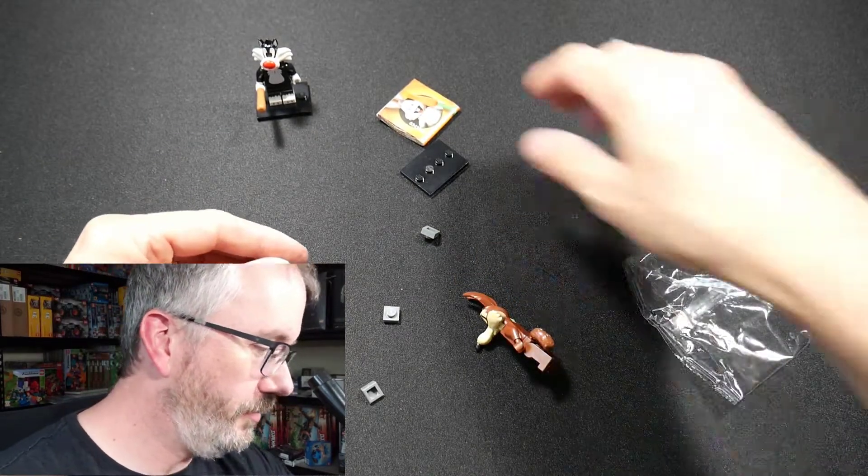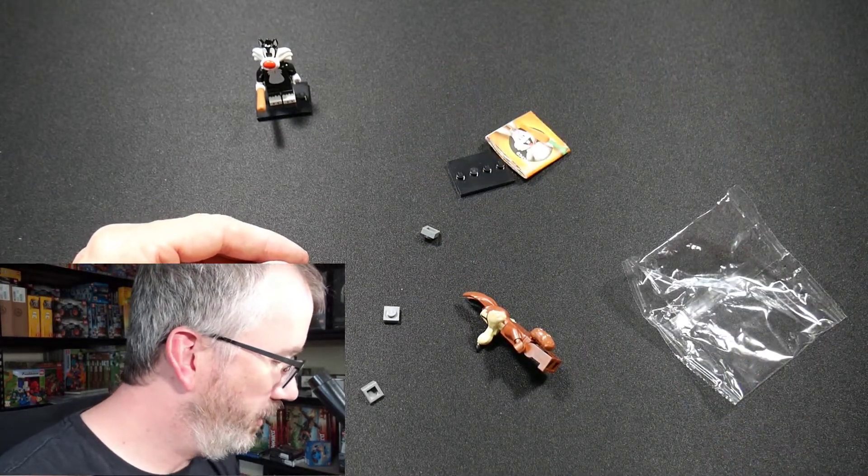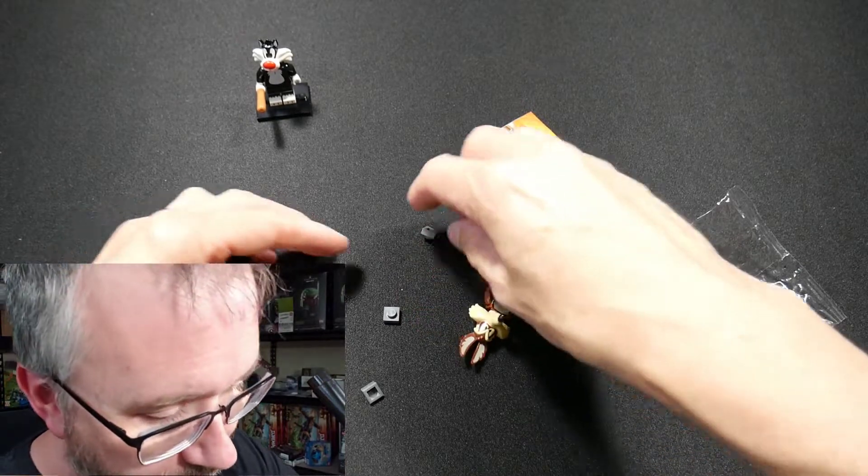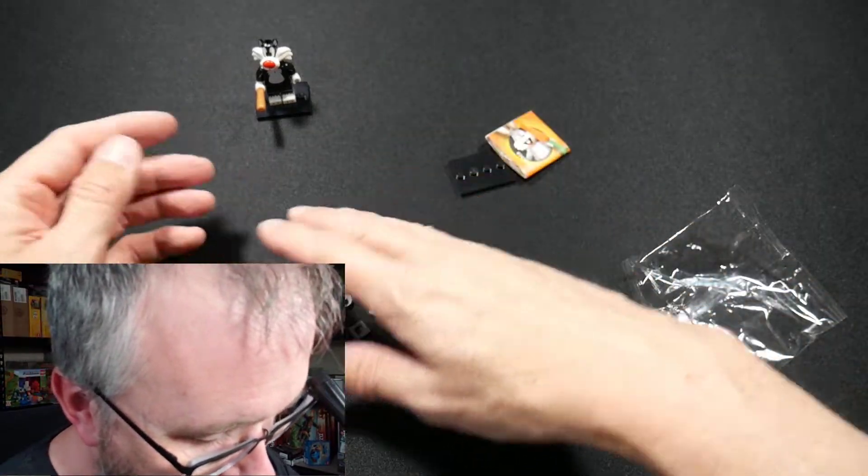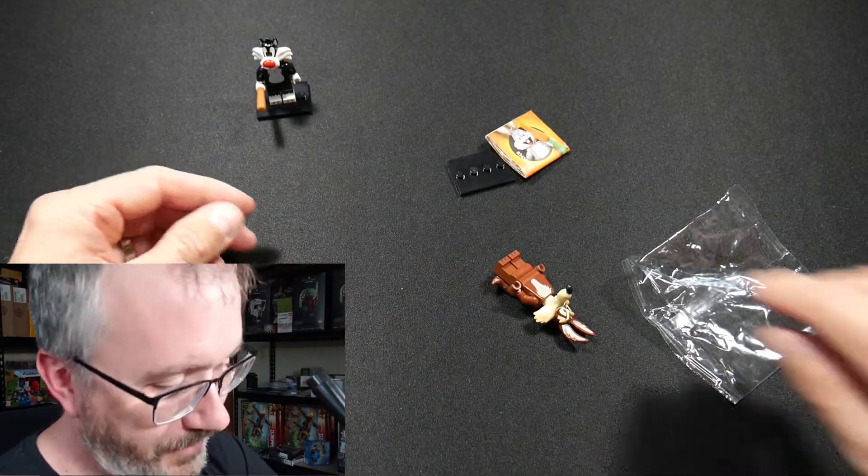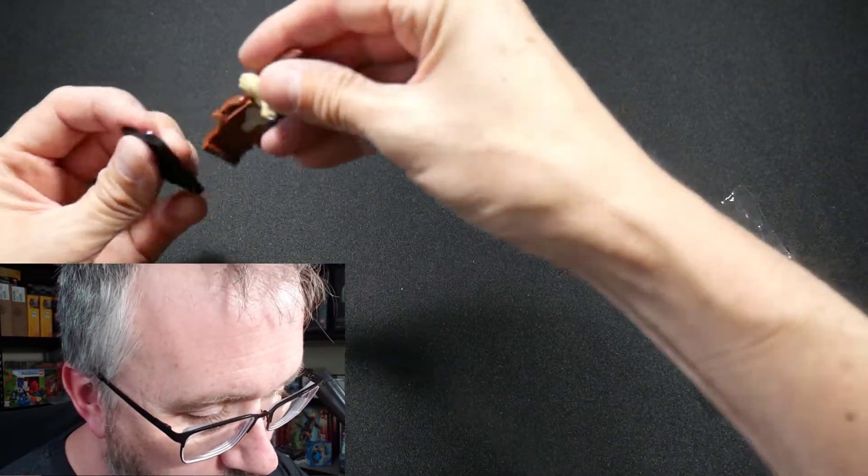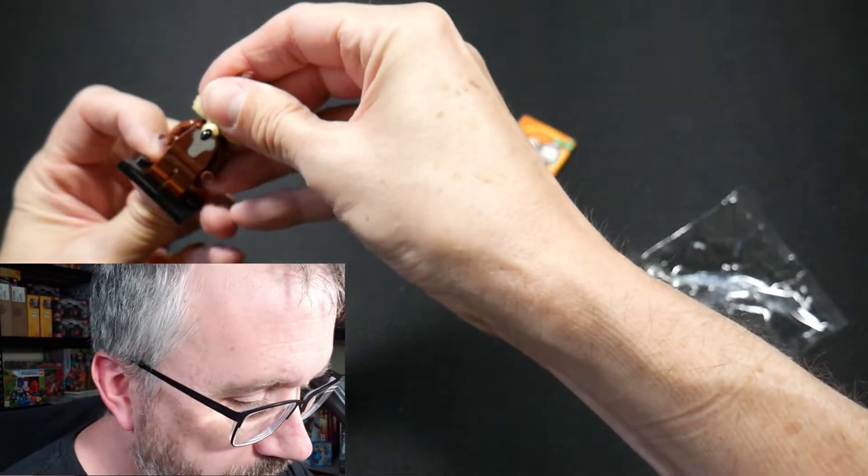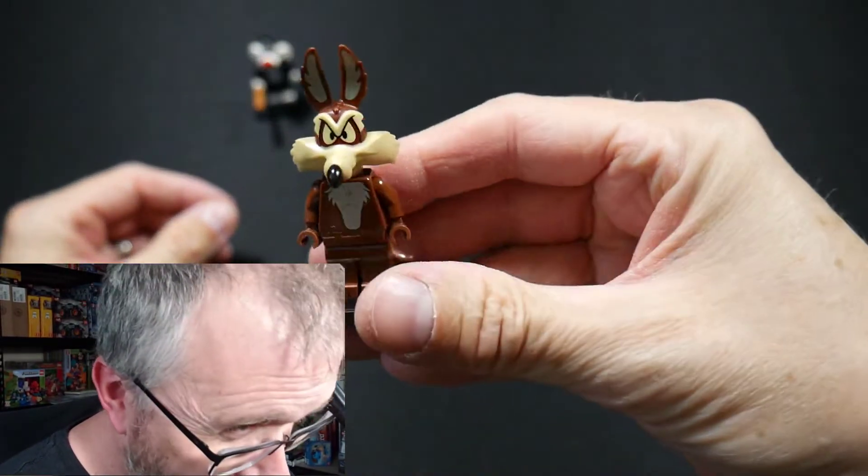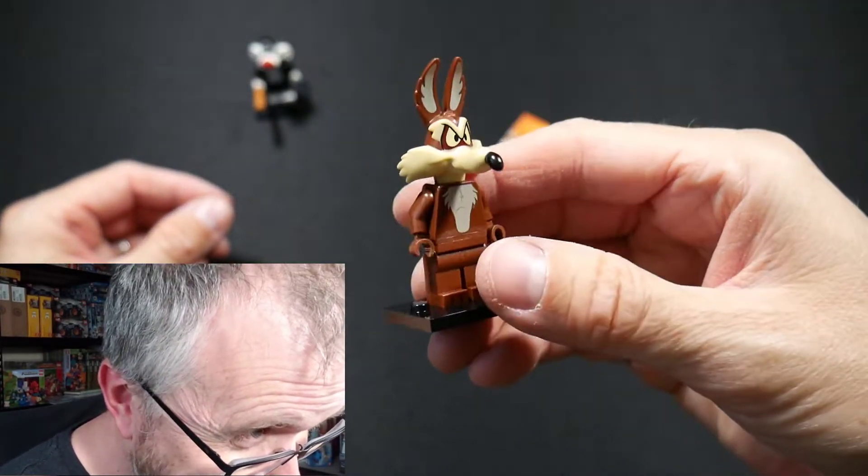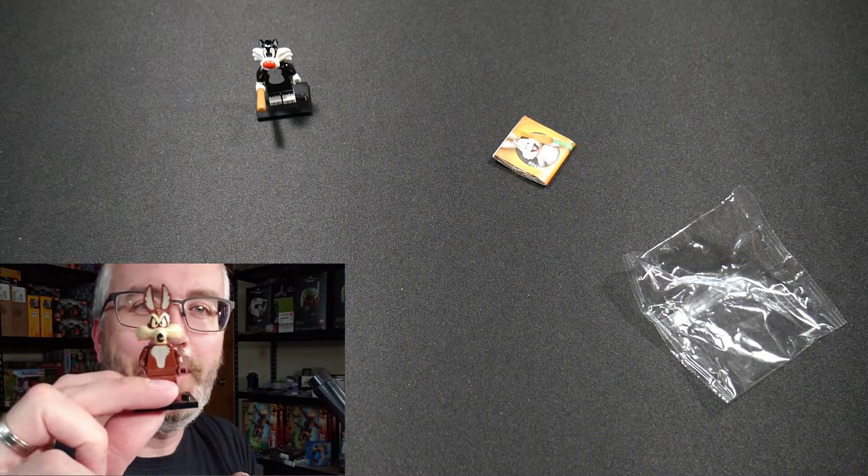And then he's supposed to have... What does he have? I don't know. I'll figure out what he comes with later. We'll just kind of go like that. I'll build his accoutrement. But there's Wile E. Coyote. Fan-freaking-tastic. Nice. Very happy.